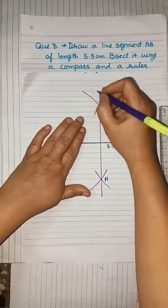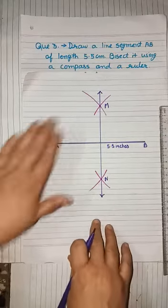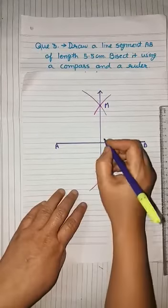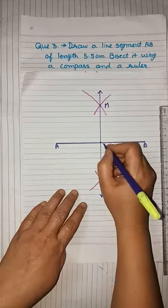Now again, as we are saying this is a line, you have to put arrow heads on both sides of line MN and you have to mark this point on line segment AB as point O.